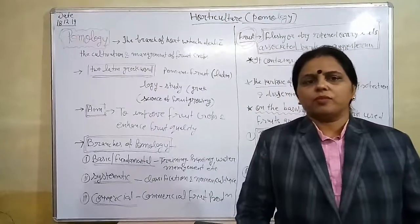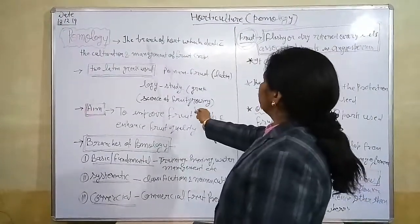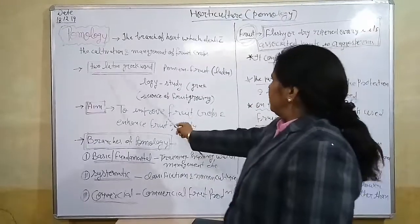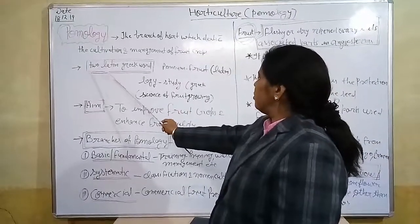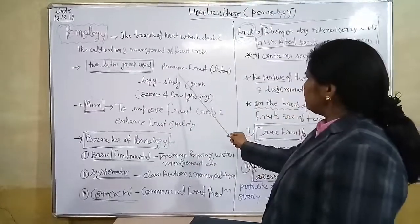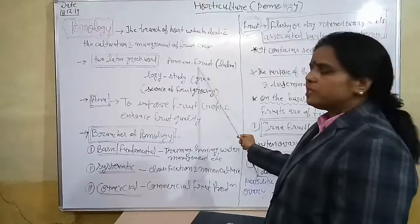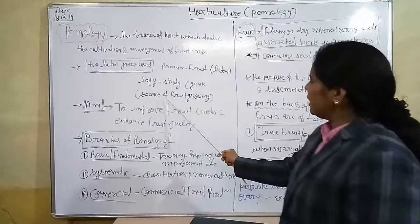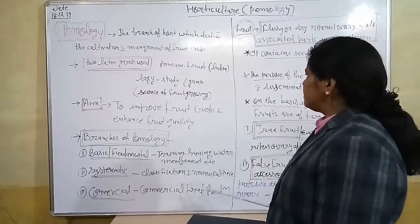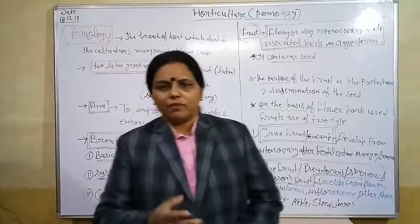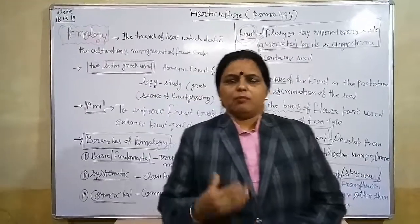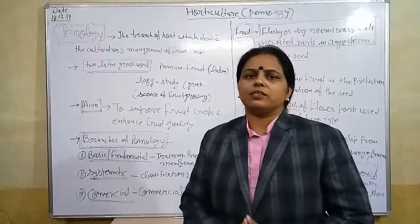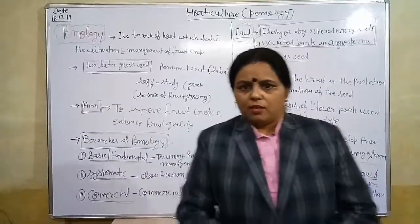Pomology — what is pomology? Pomology is a branch of horticulture which deals with the cultivation and management of fruit crops. The word pomology has been derived from two Latin and Greek words. The word 'pomer' is derived from the Latin word which means fruit, whereas the word 'logy' is derived from the Greek word which means study or science. So we can say pomology is the science of fruit growing.